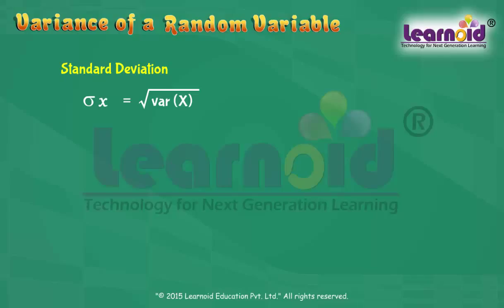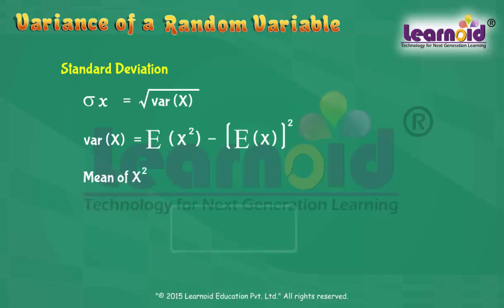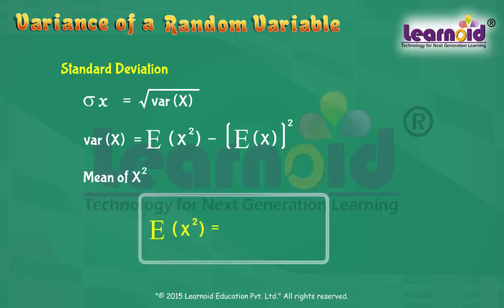The variance of a random variable can also be found by the formula: Variance of X is equal to the mean of X-squared minus the square of the mean of X. The mean of X-squared is equal to the summation of Xi-squared times P(Xi), for i equal to 1 to n.